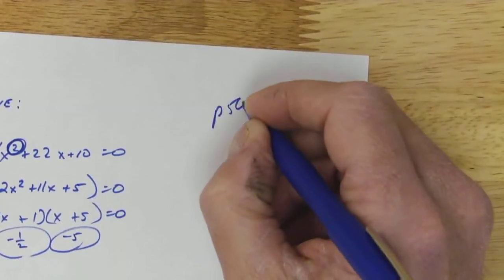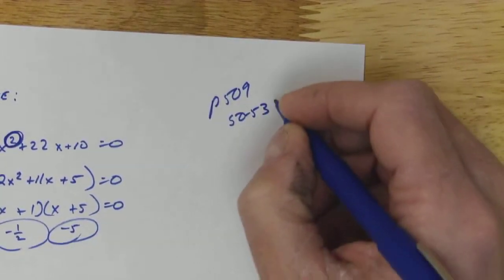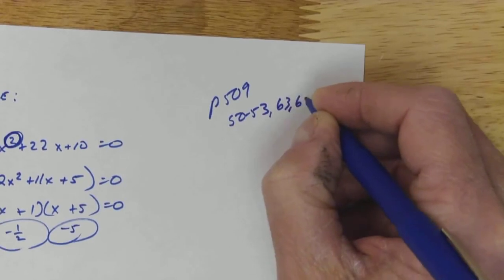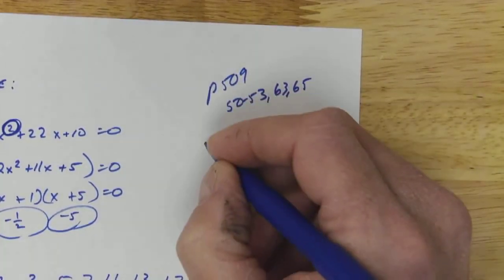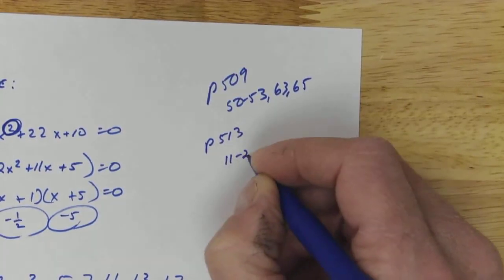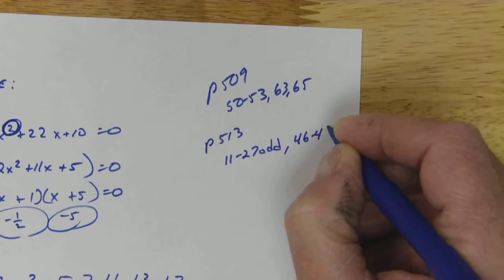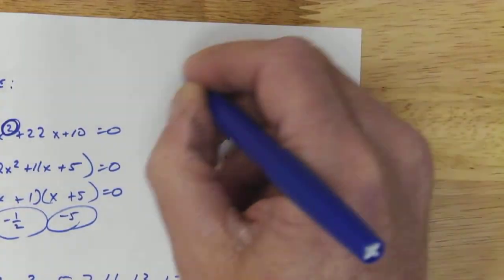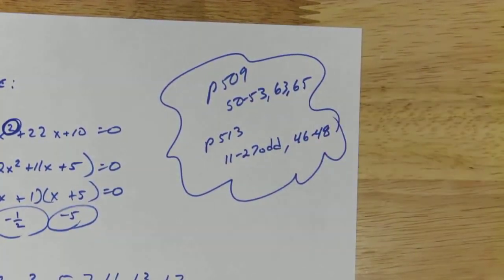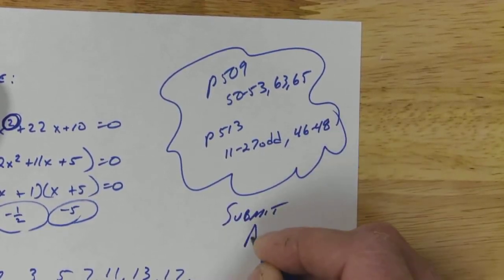Okay, so today we're going to keep it shorter today. Page 509, we've got 50 through 53 for our ACT review and 63 and 65. Page 513, we're going to go 11 through 27 odd, 46 through 48. Okay, today I do want you to submit your assignment.